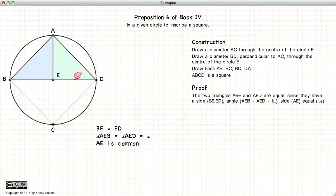So we have two triangles with two sides equal and an angle equal. So with side, angle, side, the two triangles are equal, which means that AB is equal to AD.